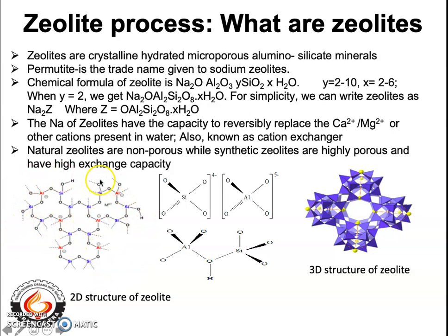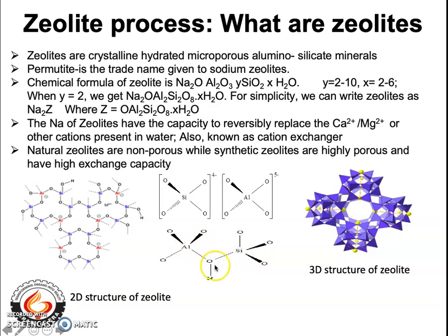The SiO4 is a tetrahedron with a net minus 4 charge, whereas aluminum is connected to 4 oxygen atoms to form a tetrahedron with a net minus 5 charge. Each SiO4 tetrahedron and AlO4 tetrahedron are connected to each other by an oxygen atom, forming the unit building block of zeolite.